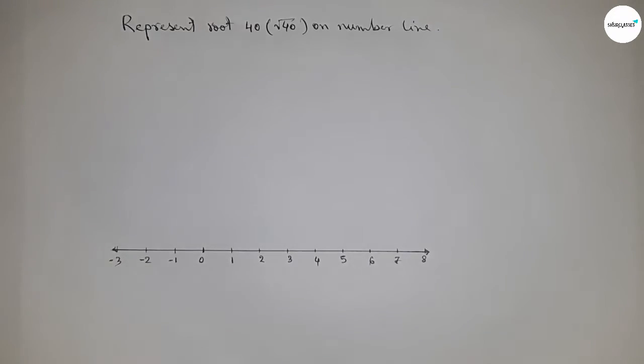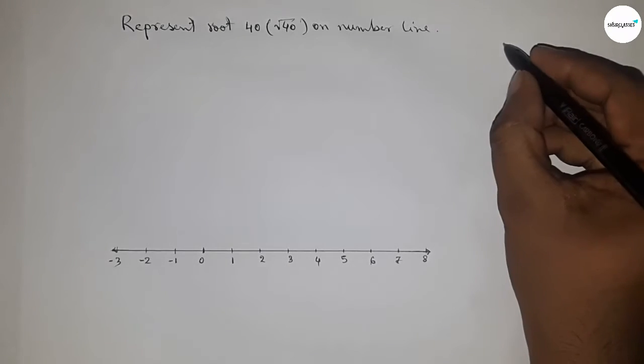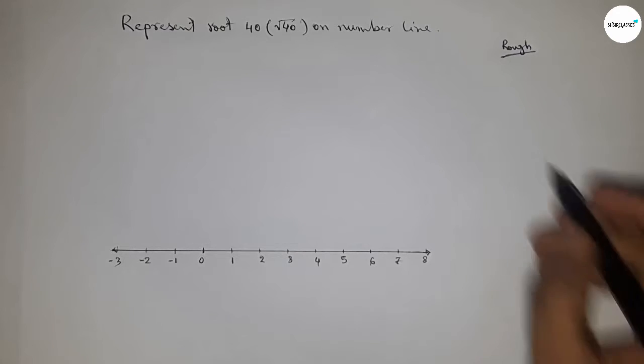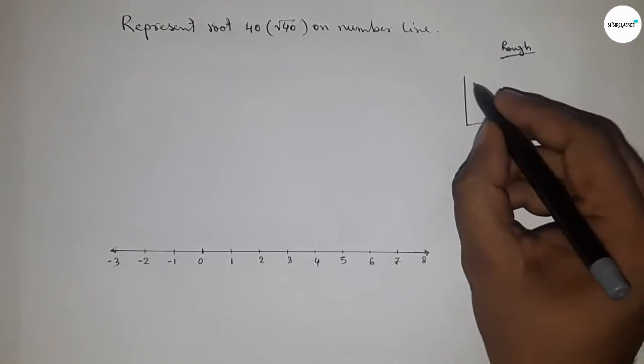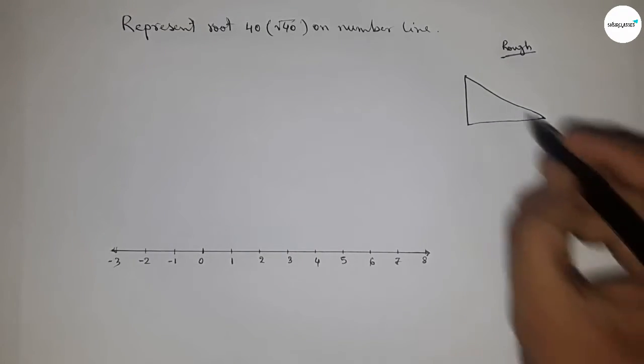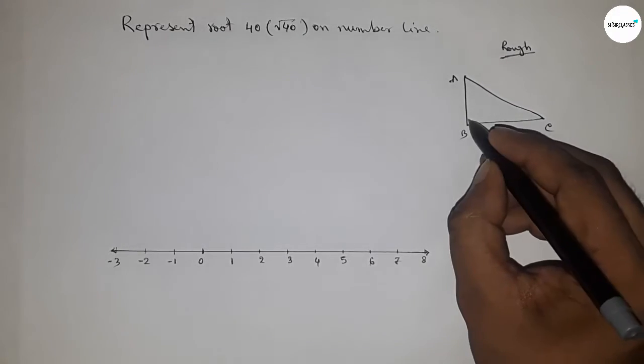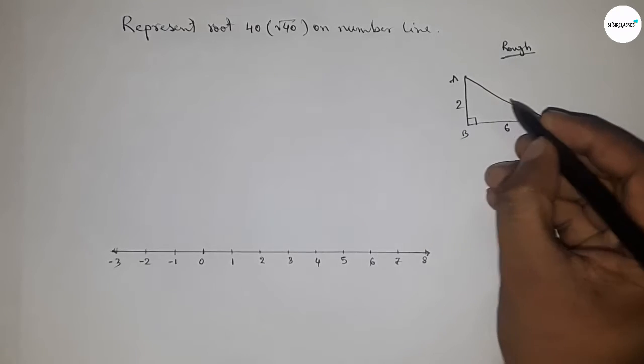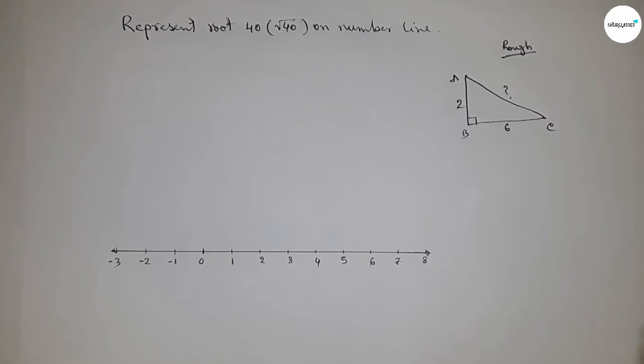So now roughly discussing the calculation. If there is a right angle triangle ABC with base 6 units and height 2 units, then what is the hypotenuse?